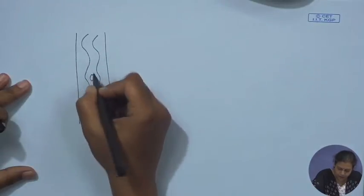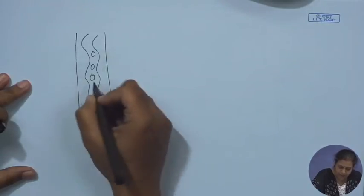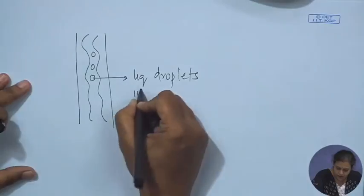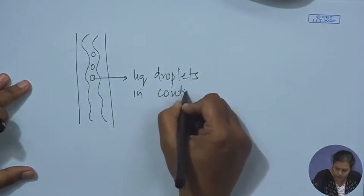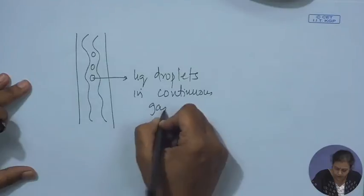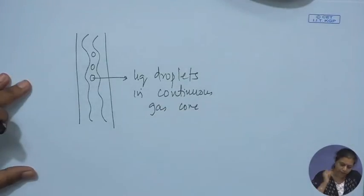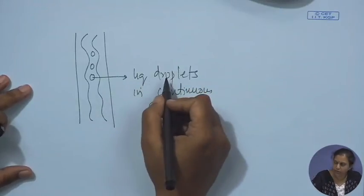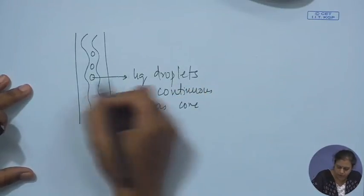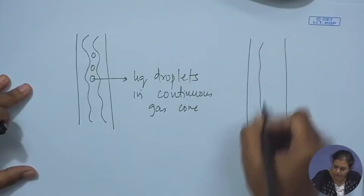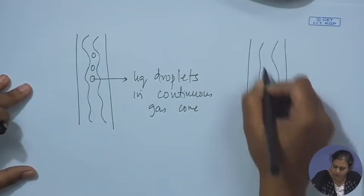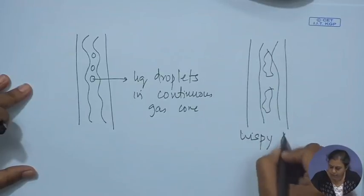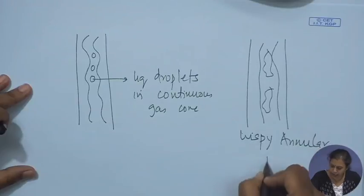As the interface becomes more wavy it picks up liquid from the film, dispersing it as liquid droplets in the continuous gas core. If the liquid velocity is increased further, a point may be reached where the liquid droplets gradually coalesce to form wisp-like structures, giving what is called a wispy annular flow — but it remains an annular flow.